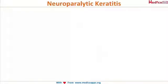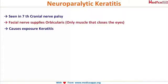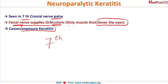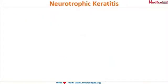The first type to discuss is neuroparalytic keratitis. As the name suggests, it occurs due to palsy of the seventh nerve. It is a kind of exposure keratitis — the cornea is exposed to the external environment because the facial nerve (seventh nerve) supplies the orbicularis, which is the only muscle that closes the eye. When the lid is paralyzed, the cornea is exposed, causing neuroparalytic keratitis.